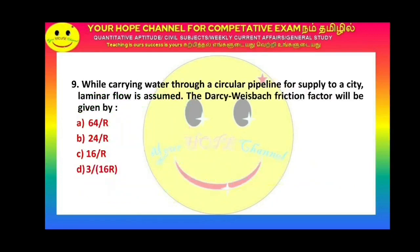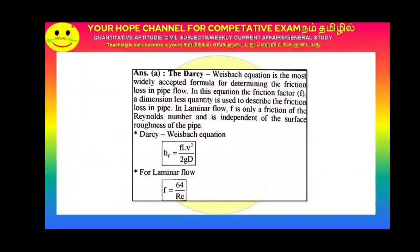Next question: While carrying water through a circular pipeline for a city, laminar flow is assumed. The Darcy-Weisbach friction factor will be what? The answer is 64/Re. The head loss major frictional loss formula from the Darcy-Weisbach equation is HF = f·L·V²/(2G·D). For laminar flow, the friction factor f = 64/Re.